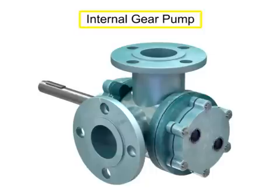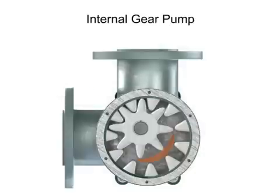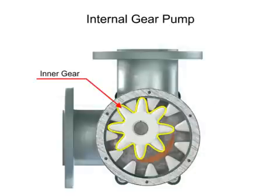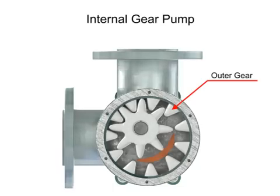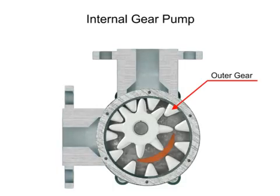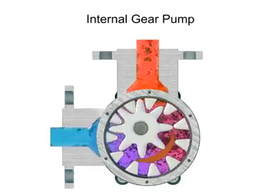Internal gear pumps are exceptionally versatile. This type of pump has one inner gear which is inside a second outer gear. The inner gear has a shaft driven by a motor and has teeth that protrude outward. The outer gear has teeth that protrude inward toward the center of the pump. As the inner gear rotates, it meshes with and moves the outer gear.